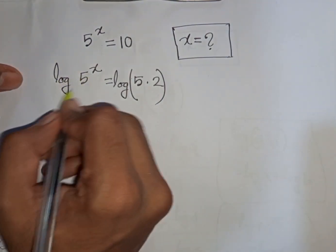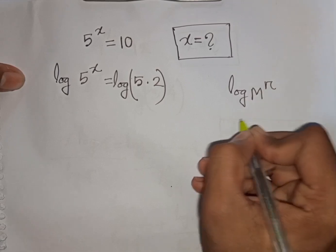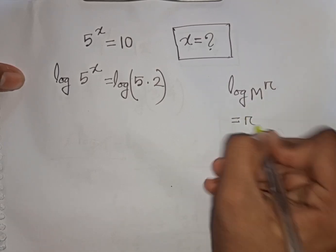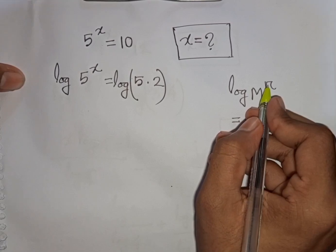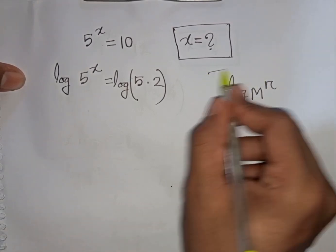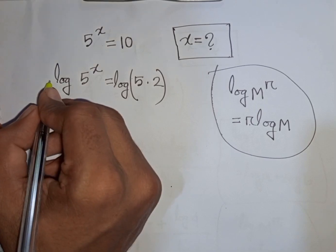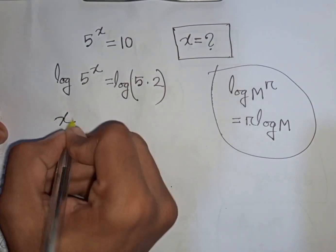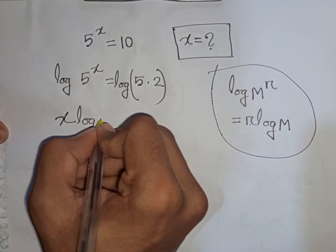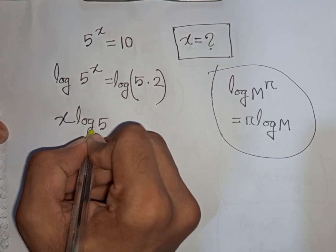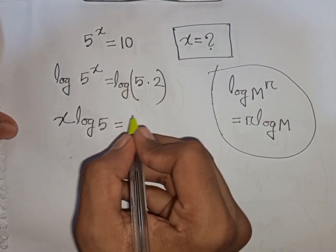Now here we apply the rule: log m power r is equal to r log m. That means this power r will move to the front. So according to this rule, this power x will move to the front, and we can write x log 5 is equal to log of 5 times 2.